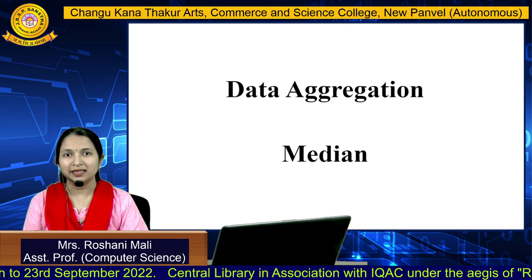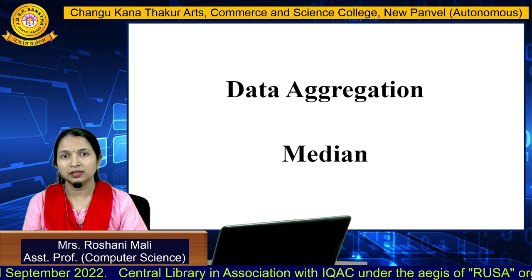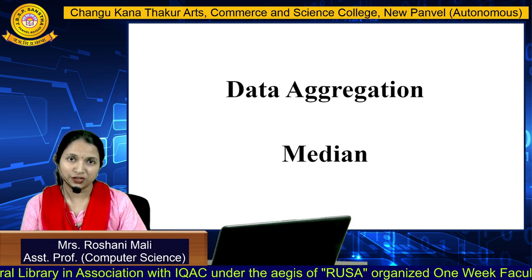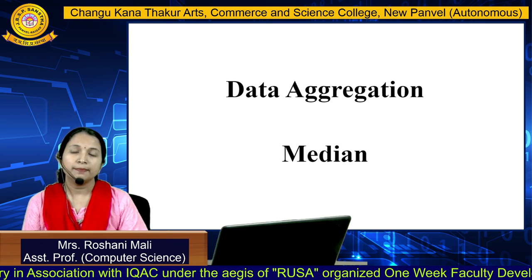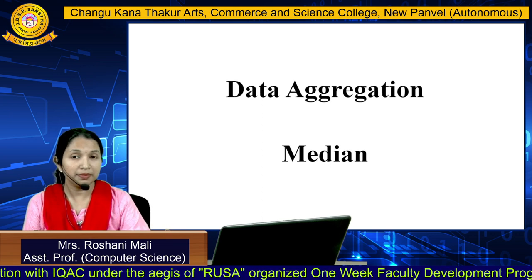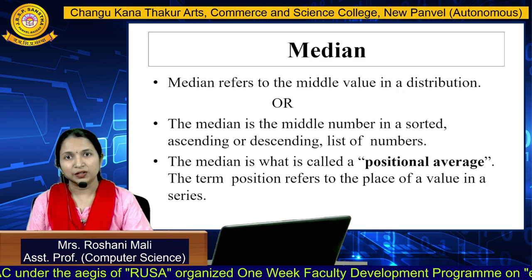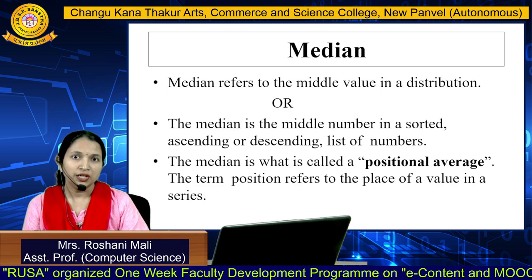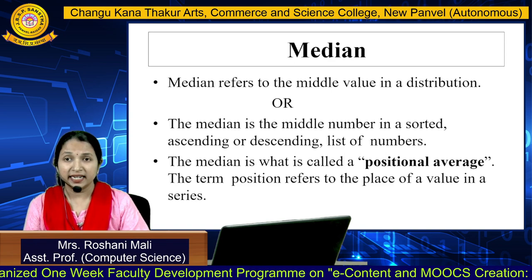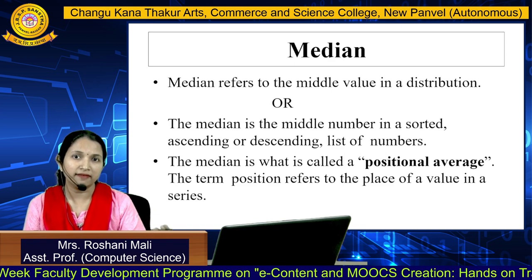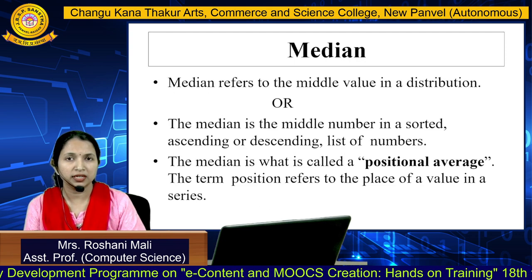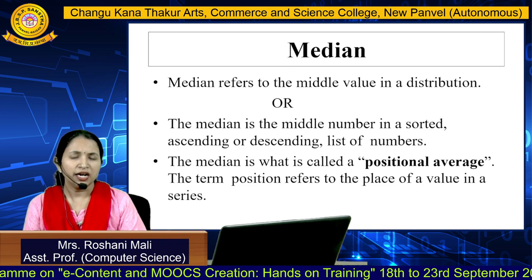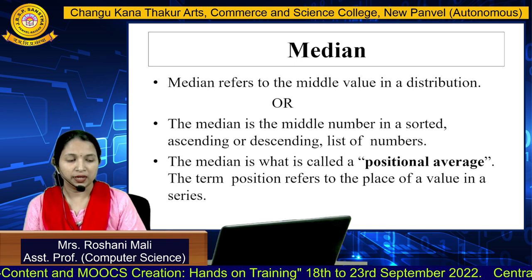Hello students, my name is Roshni Mari. Today we're going to discuss the median — a topic from statistics under data and aggregation, specifically measures of central tendency. Median means the middlemost value in the distribution. If we arrange the data in ascending or descending order, we get one middle value that divides the whole distribution in half. That middlemost value is the median. It is also called a positional average.